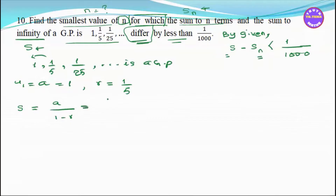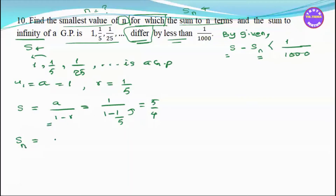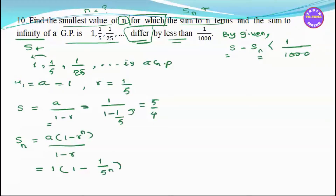Here a=1, r=1/5, so 1 minus r = 1 minus 1/5 = 4/5, and 1/(1 minus r) = 5/4. The sum to N terms formula is a times (1 minus r^n) divided by (1 minus r). So S_n = 1 minus (1/5)^n, and 1^n = 1, so (1/5)^n = 1/5^n.